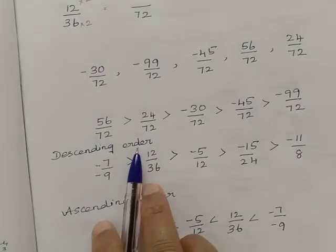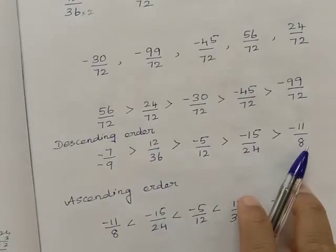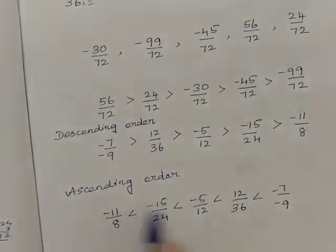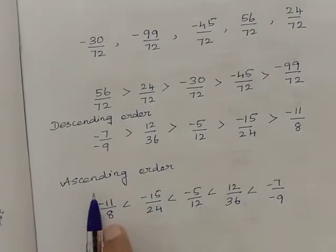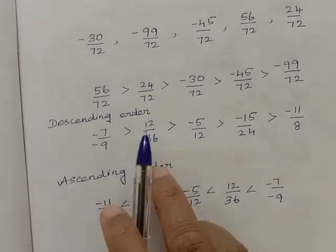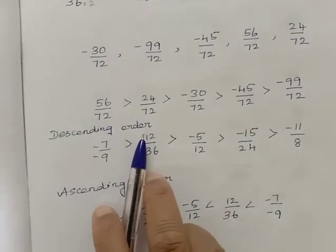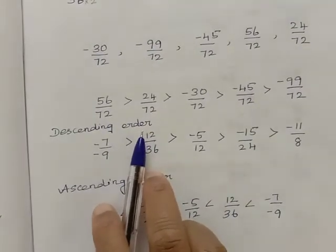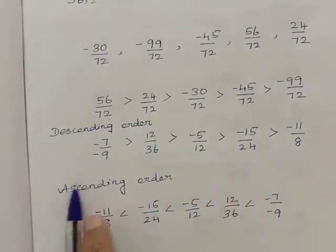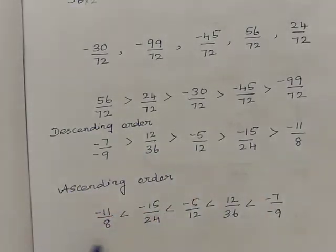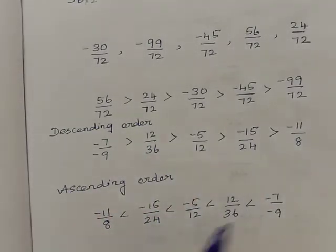So the descending order is written first. The reverse of that descending order gives you the ascending order.